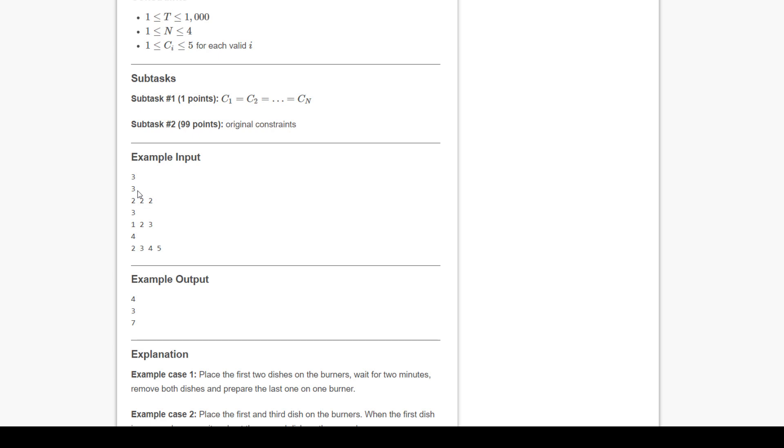The third test case has four dishes: 2, 3, 4, and 5. You can take 2 and 5, or 3 and 4 together. If you take 2 and 5, the two-minute dish completes and you can keep the second dish that requires 3 minutes. After 3 minutes that dish completes, and after 5 minutes the other dish completes, then you can put the 4-minute dish. The expected output is 7 minutes. You can go through the explanation—it's given: place the first two dishes on the burner, wait for two minutes, remove both dishes, and prepare the last one.